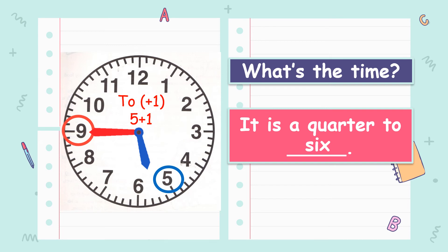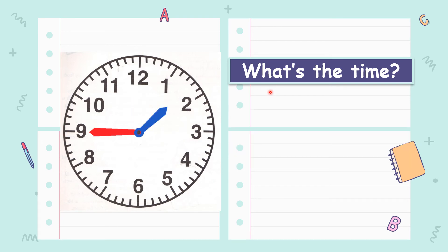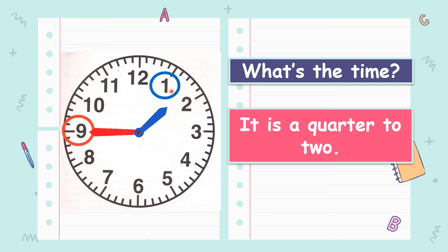Now the next one. What's the time? Let's see the minute hand — it shows 9. So the answer should be: it is a quarter to. Now what about the hour hand? Yes, it is 1. So it would be: it is a quarter to 2. 1 plus 1 equals 2.